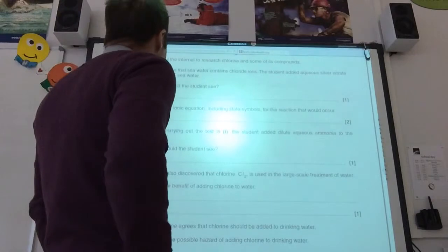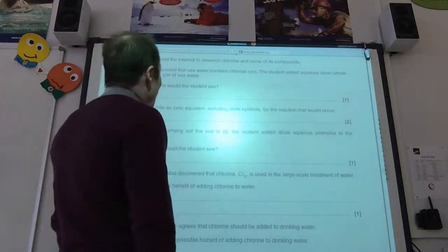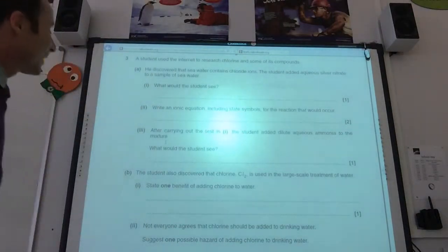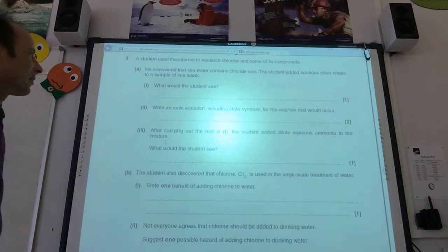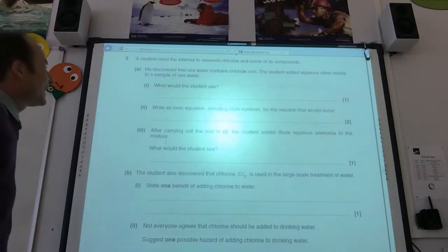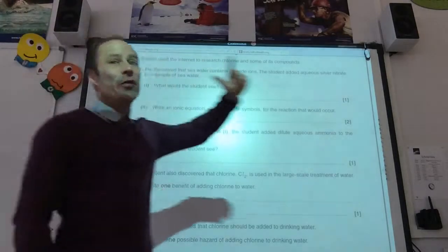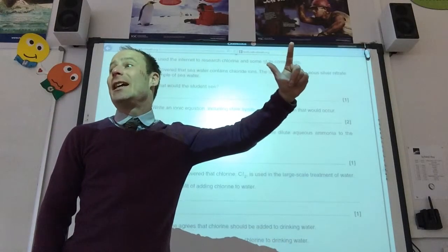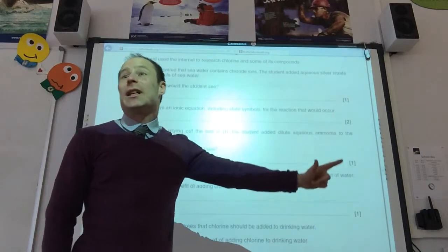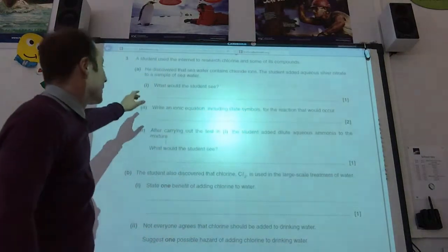A student used the internet to research chlorine and some of its compounds. He discovered that sea water contains chloride ions. Clever chap. And so he added aqueous silver nitrate to the sample of sea water. What would he see? Chloride ions, silver nitrate. He's going to see a white precipitate. Yeah. So, you'd see white.